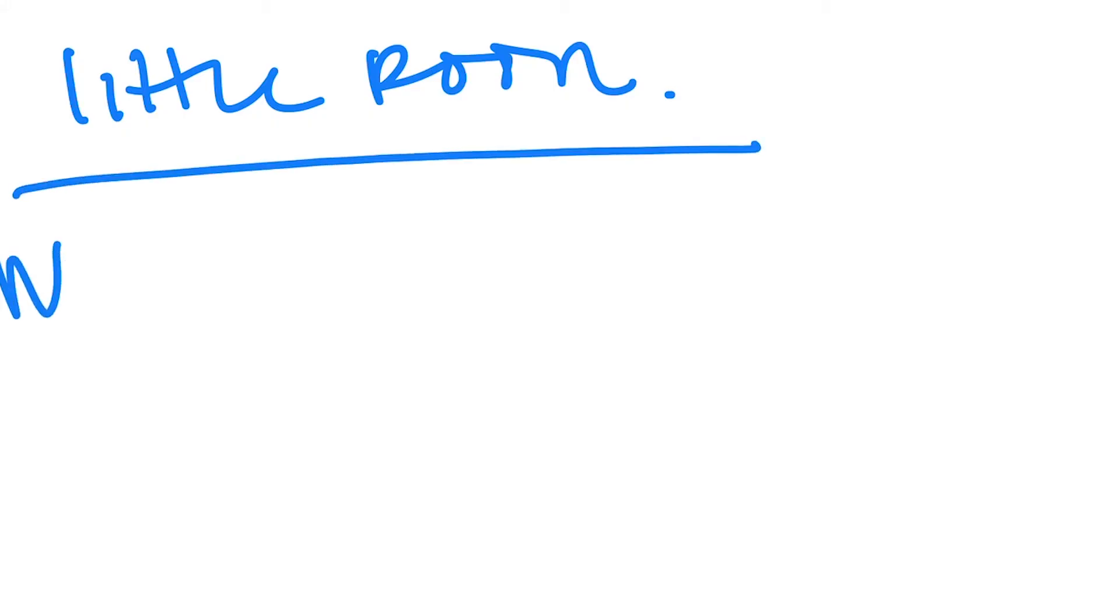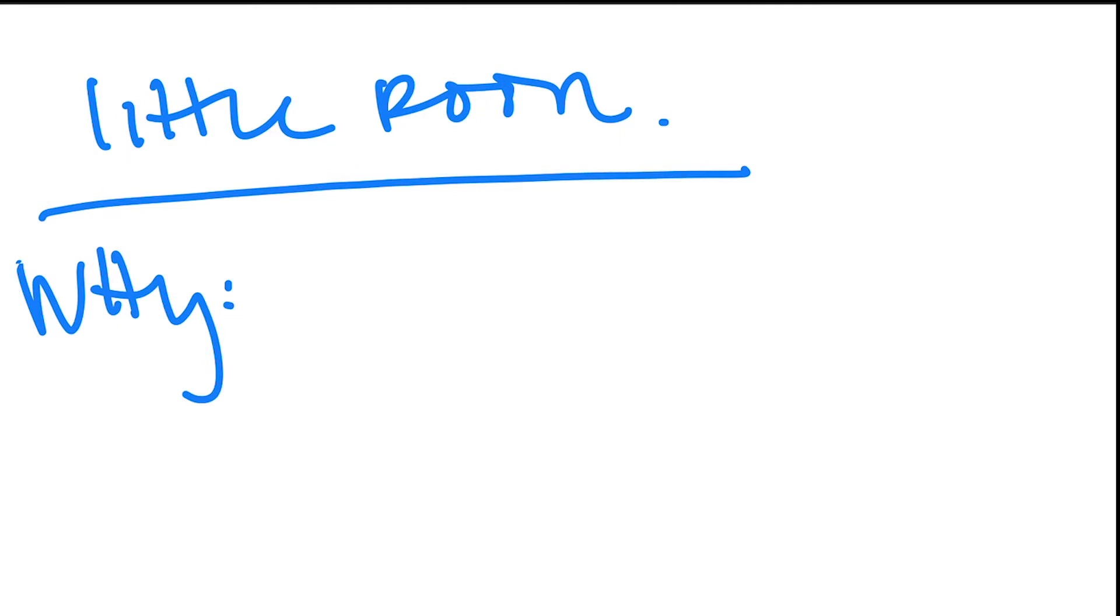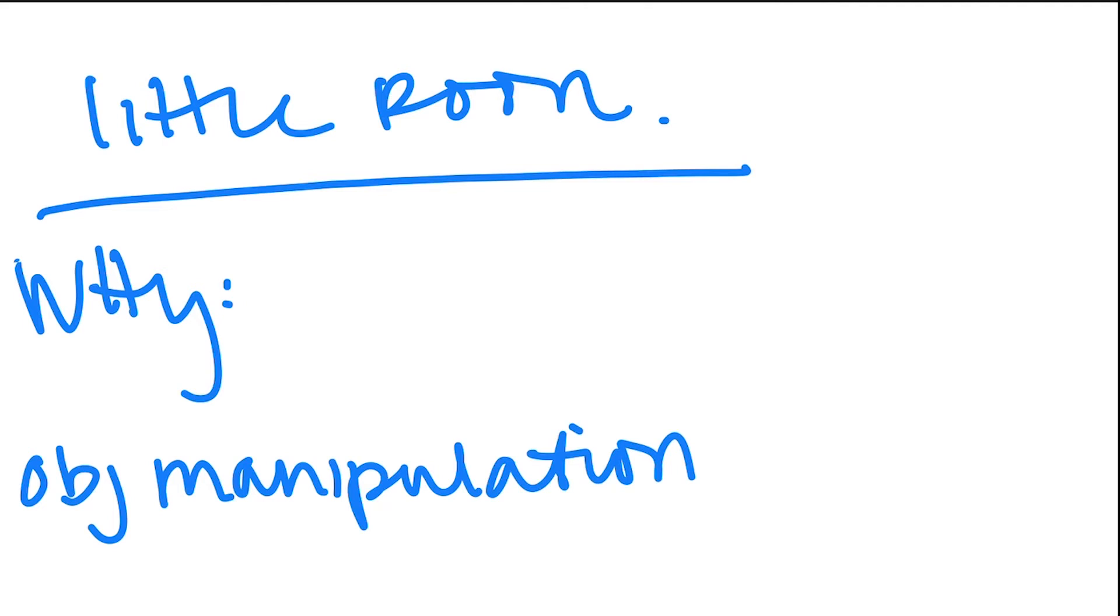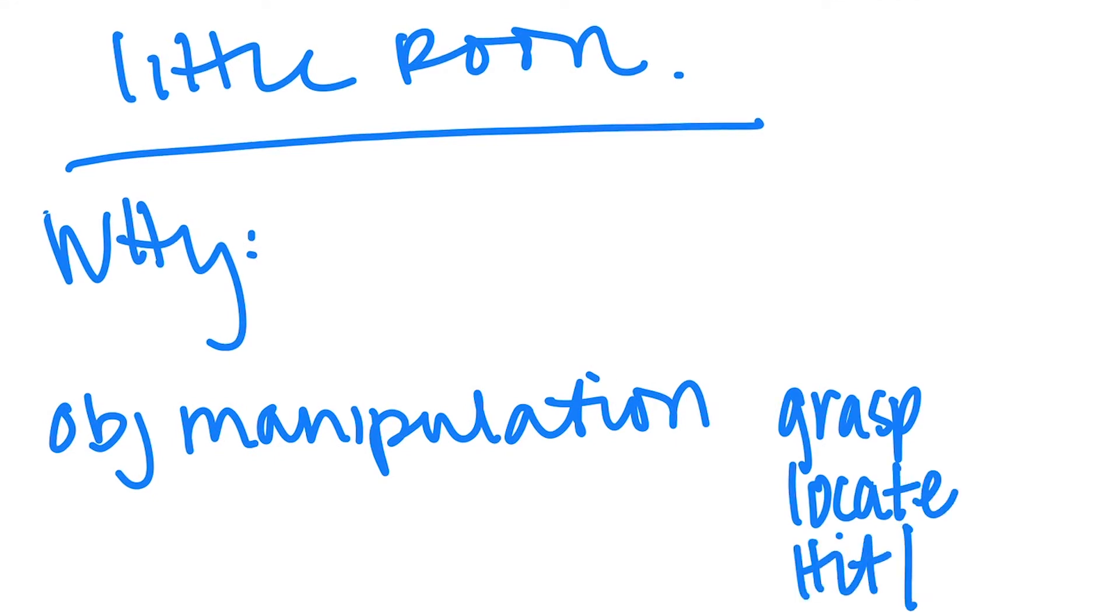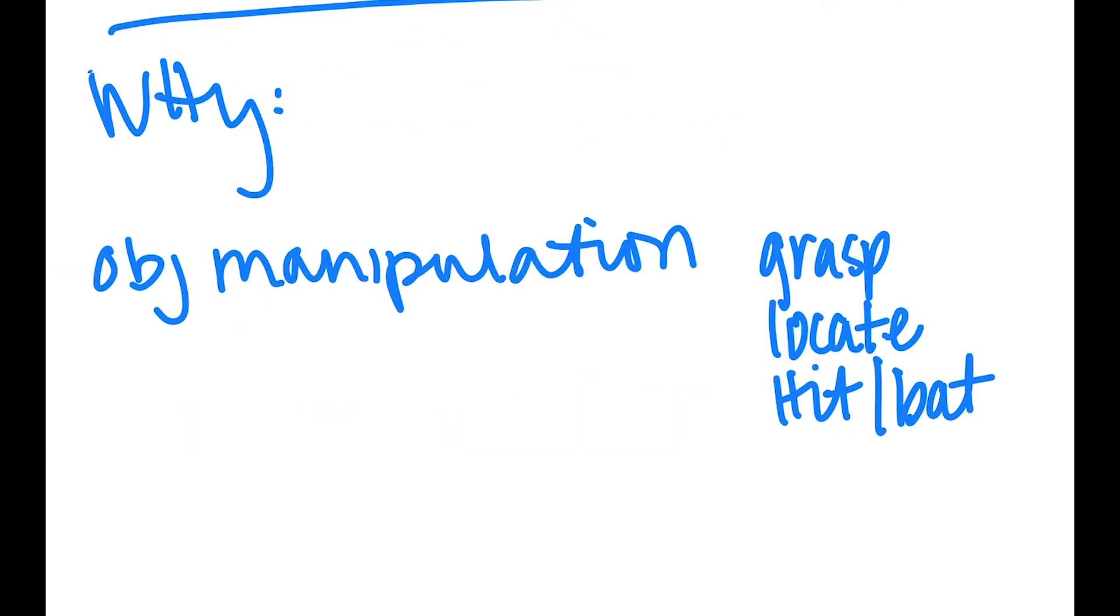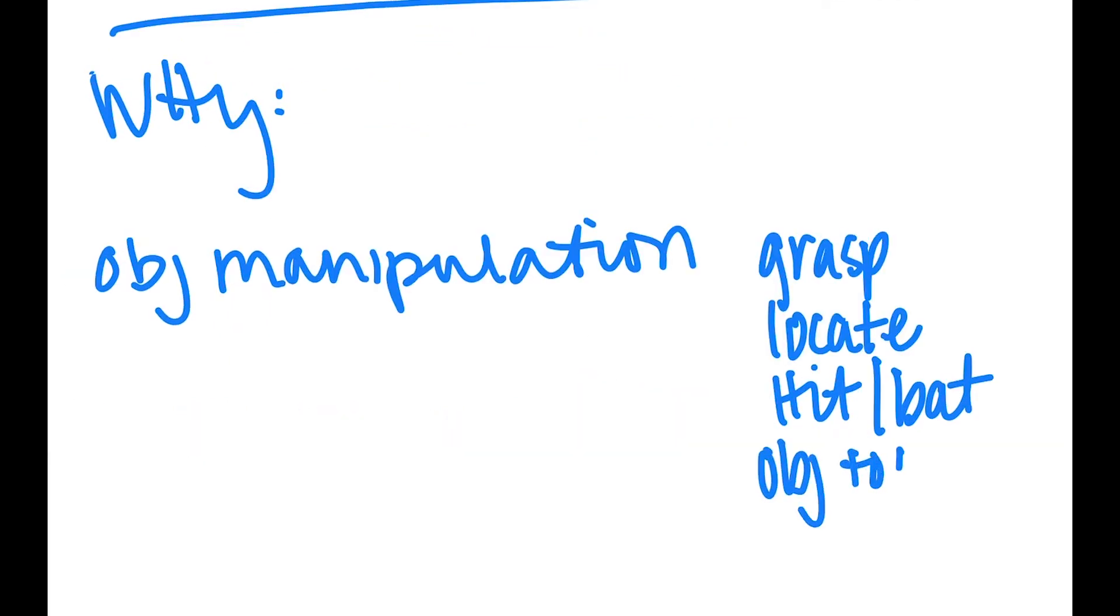Let's talk a little bit about why we would choose to utilize a little room and why it's important. So first you're going to look at object manipulation. Object manipulation is essentially the child's ability to grasp, locate, hit or bat, or bring an object to their mouth. When you manipulate an object, it's essentially purposeful motion or exploration of an environment.